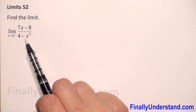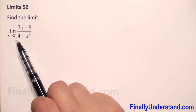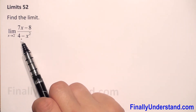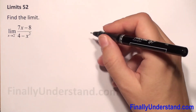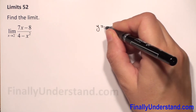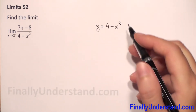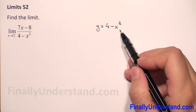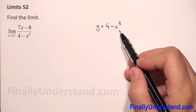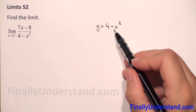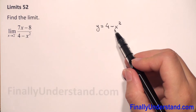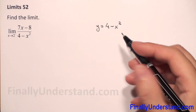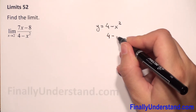So, as always when we have a left or right limit, we will draw the graph of the function in the numerator. In the numerator we have the function 4 minus x squared. This is a quadratic function, so the graph will be a parabola. Because the coefficient before x squared is negative, the parabola will open down.